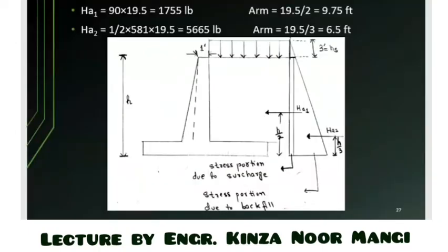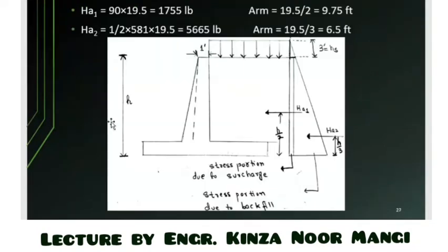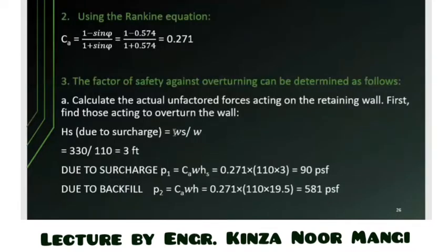Calculating the unfactored forces: first, we convert the surcharge (350 psf UDL) to an equivalent head pressure by dividing by the unit weight of soil (110 pcf), giving an equivalent head of 3 feet. The pressure due to surcharge = Ka × γ × h = 0.271 × 110 × 3.